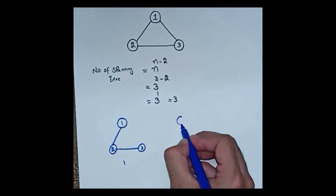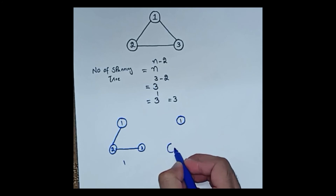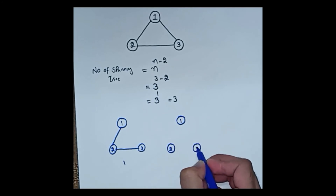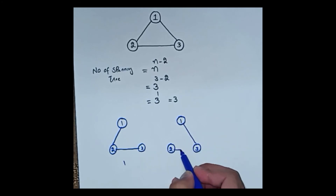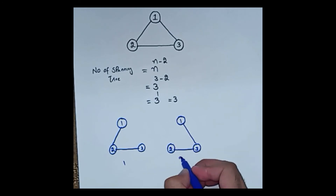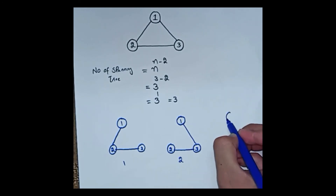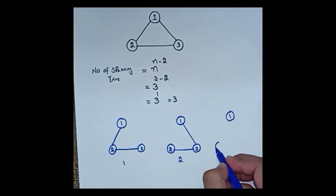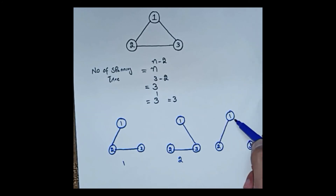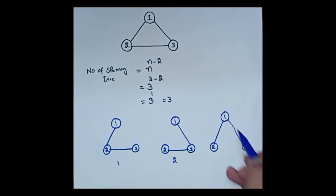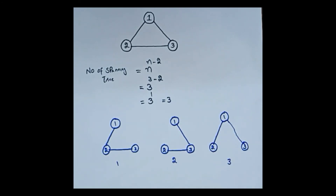The second possible spanning tree of this graph is this one — nodes one, two, three — and the third possible spanning tree will be this one. So these are the three possible spanning trees of this complete graph.